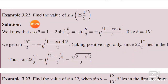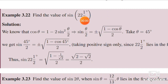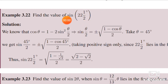Example 3.22: find the value of sin 22 and a half degrees. Let us simplify — we get 2 into 22 is 44, 44 plus 1 is 45, so this is sin 45 by 2. We find the value of sin 45, which is 1 by root 2. But it is of the form sin theta by 2.